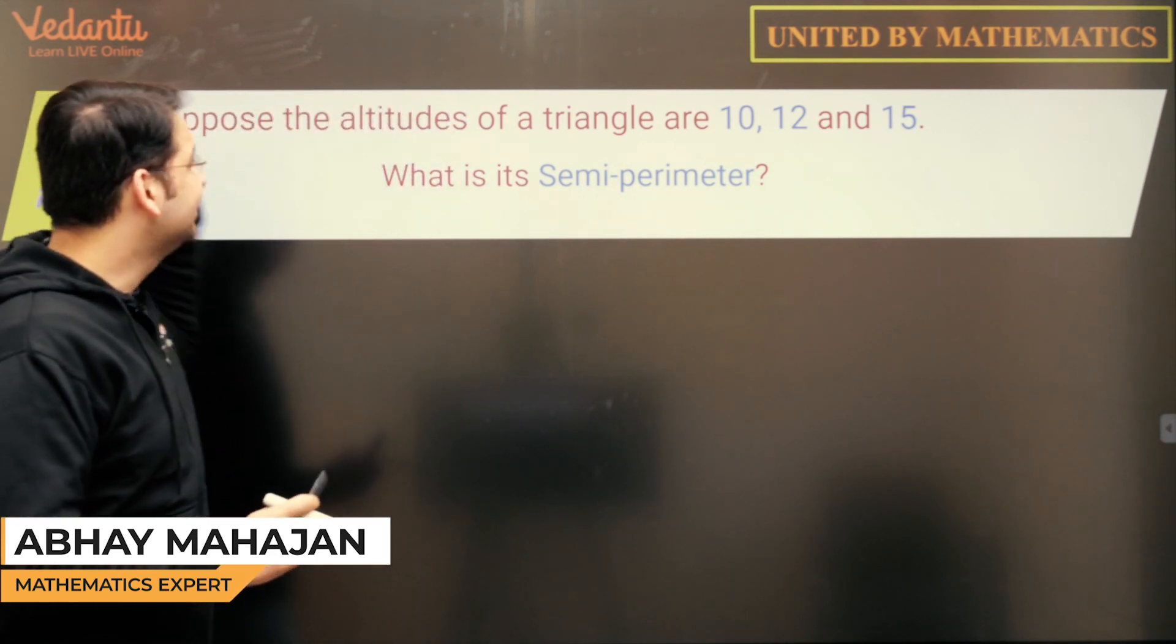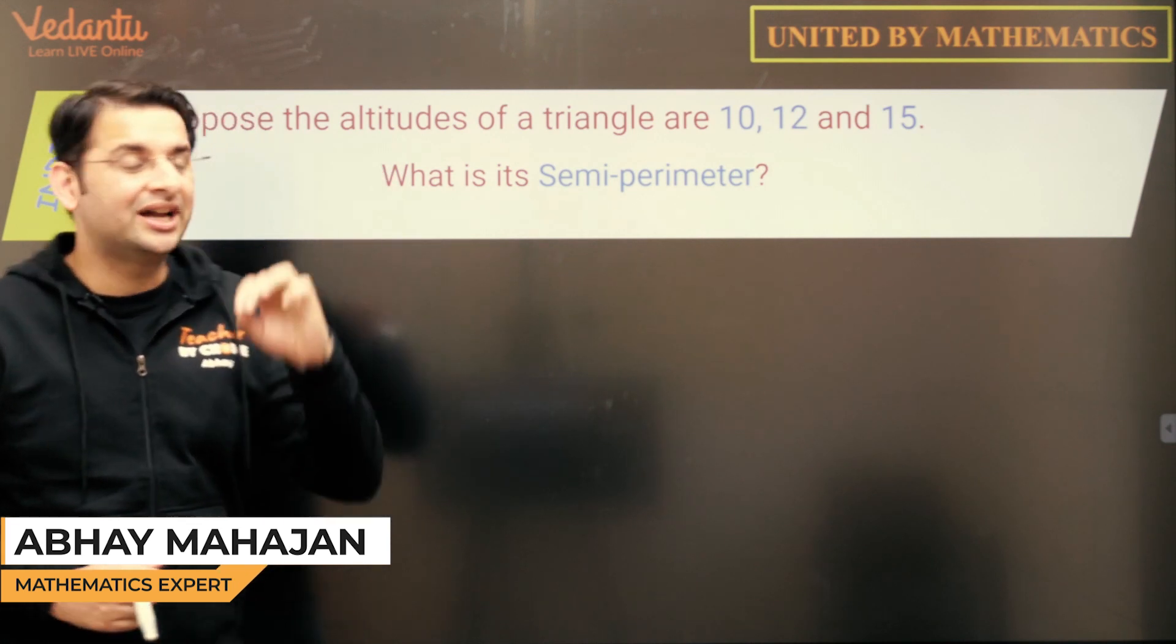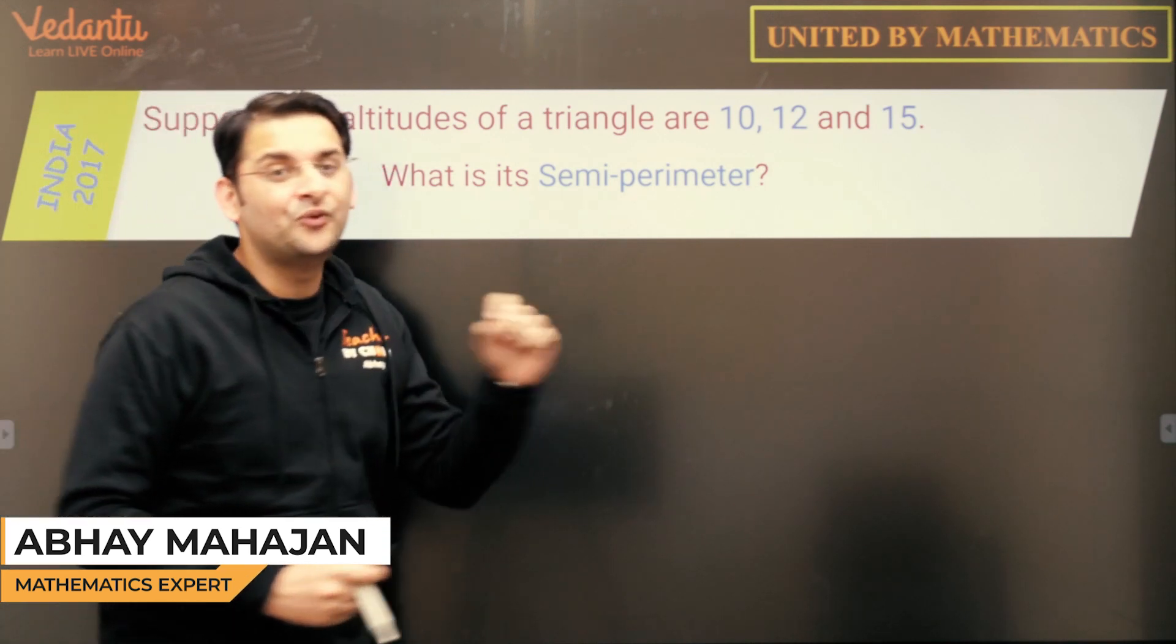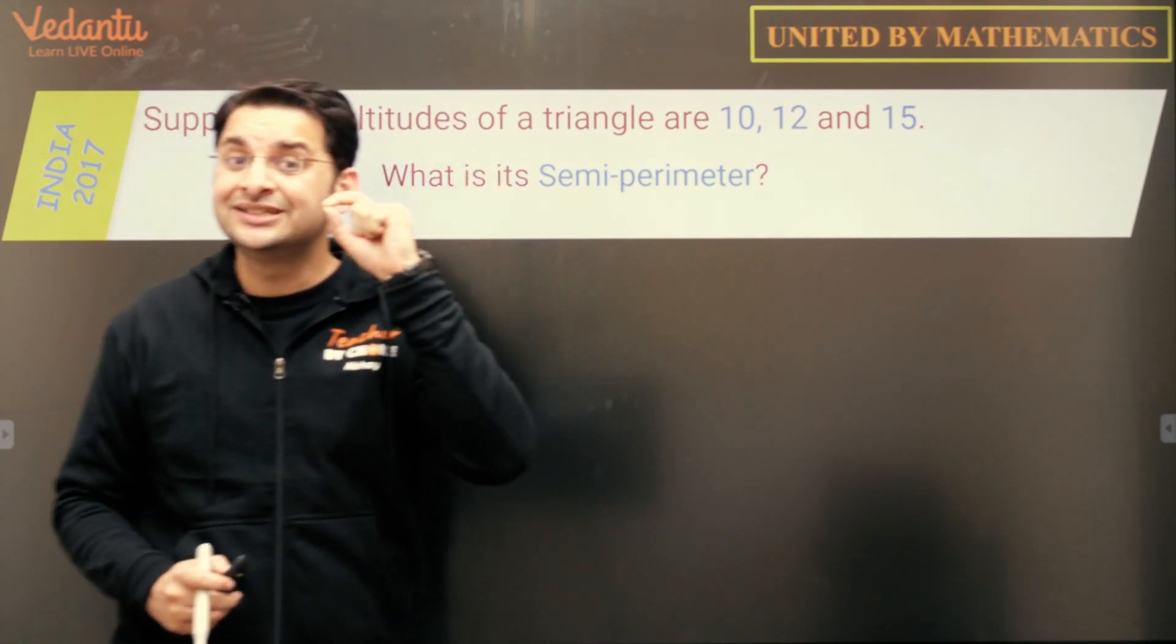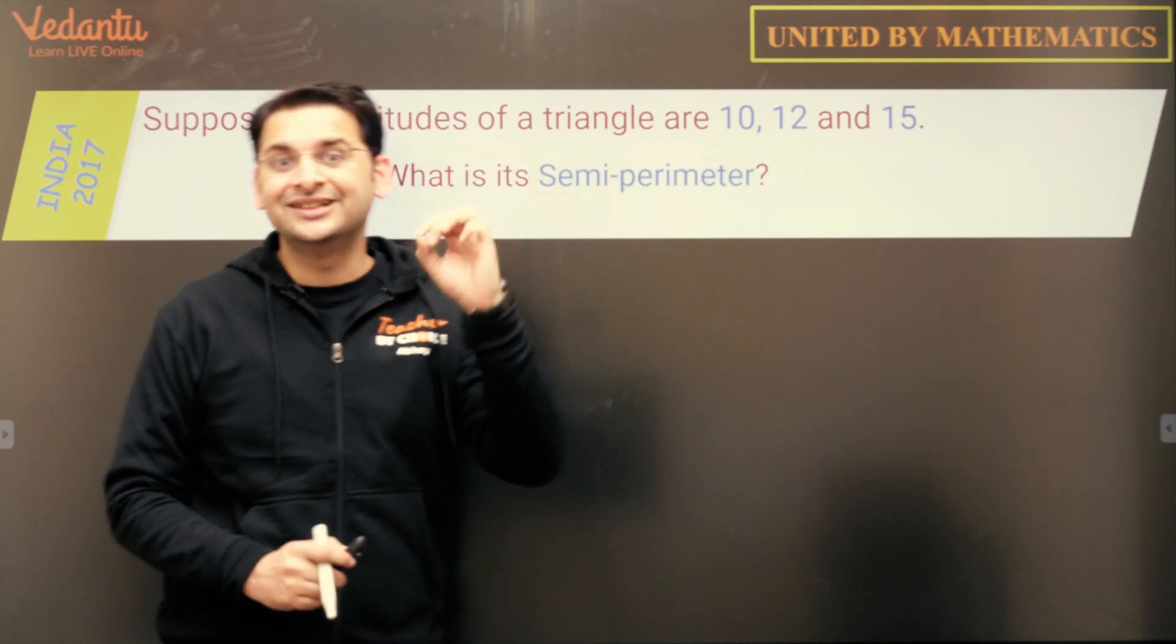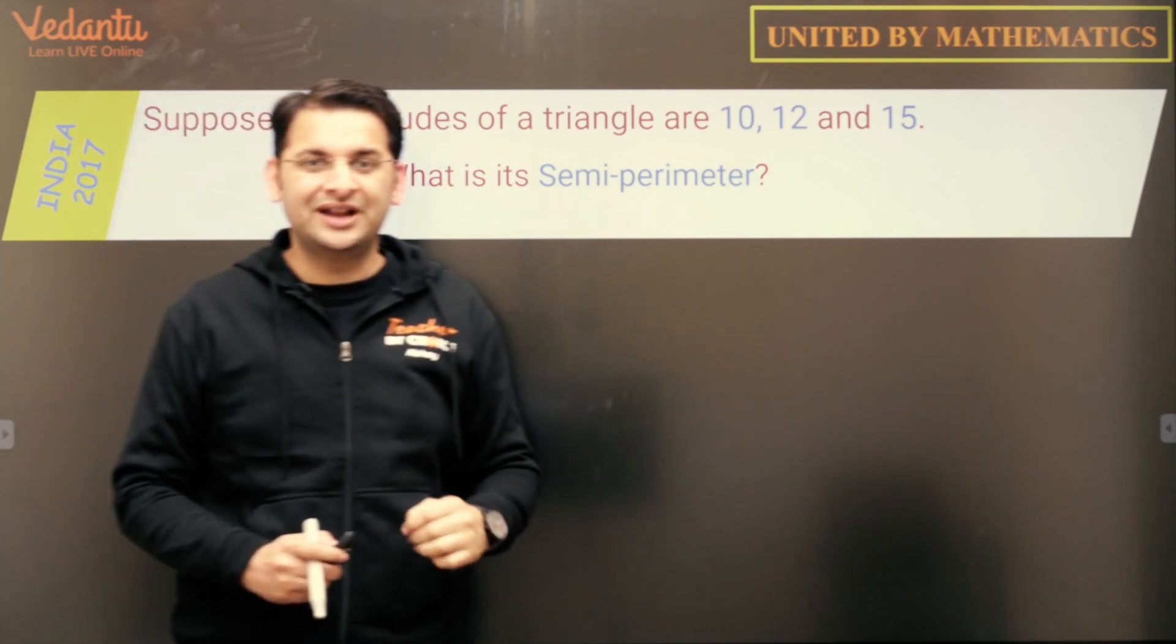The question says, suppose the altitudes of a triangle are 10, 12 and 15, what is the semi-perimeter? So we're not given the sides, we're only given the altitudes of the triangle. We are to find the semi-perimeter or the perimeter of the triangle.